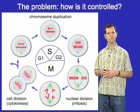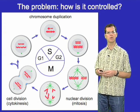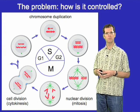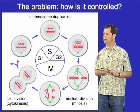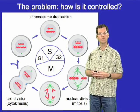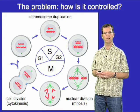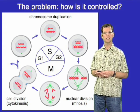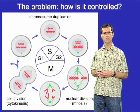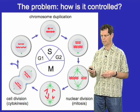Studies of this regulatory system have come from a wide range of different model organisms, and in fact most of the major discoveries about this system have come from very simple eukaryotic model organisms such as the budding yeast and the fission yeast.